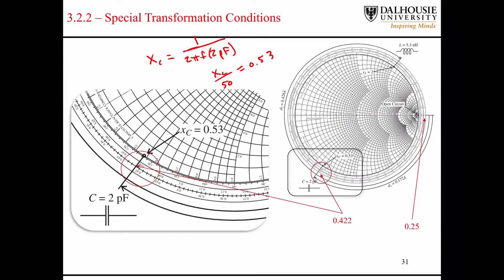So we have to find out which curve of constant reactance corresponds to this number here. So we have to figure out what this curve corresponds to. So 0.53 ends up being somewhere right here on this curve.